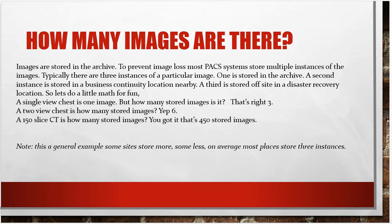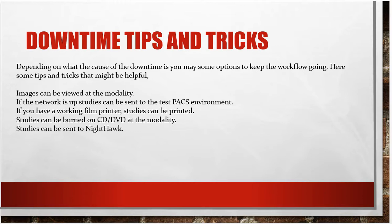With three copies of every image, let's do a little math. A single-view chest X-ray: one image stored three times = 3 stored images. A two-view chest: 2 images × 3 = 6 stored images. A 150-slice CT: 150 images × 3 = 450 stored images. This is a general example — some sites store more, some less — but on average, most places store three instances of every image.